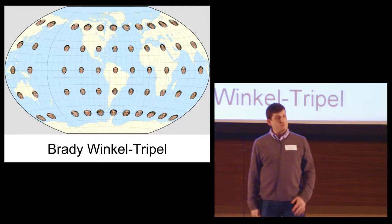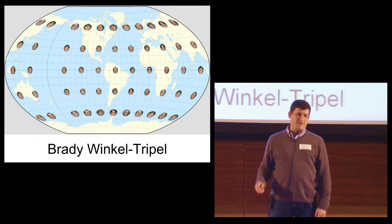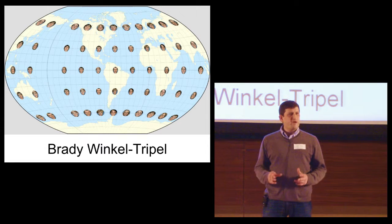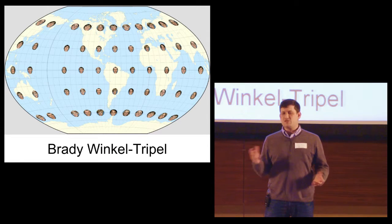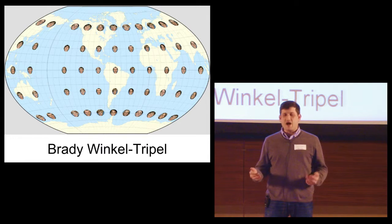This is the Winkel tripel projection. This is the compromise projection selected by National Geographic in 1992. Notice that no Bradys are too big or too small. Some are skewed, but they're not really skewed until you get to the edge. This is a pretty good compromise projection.